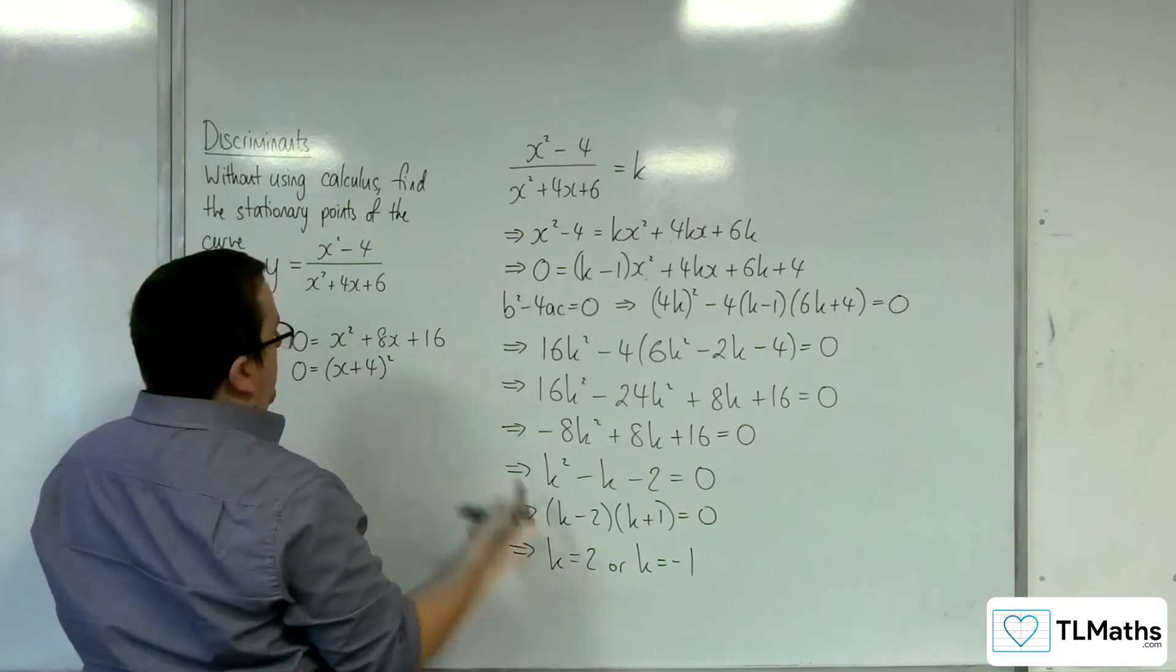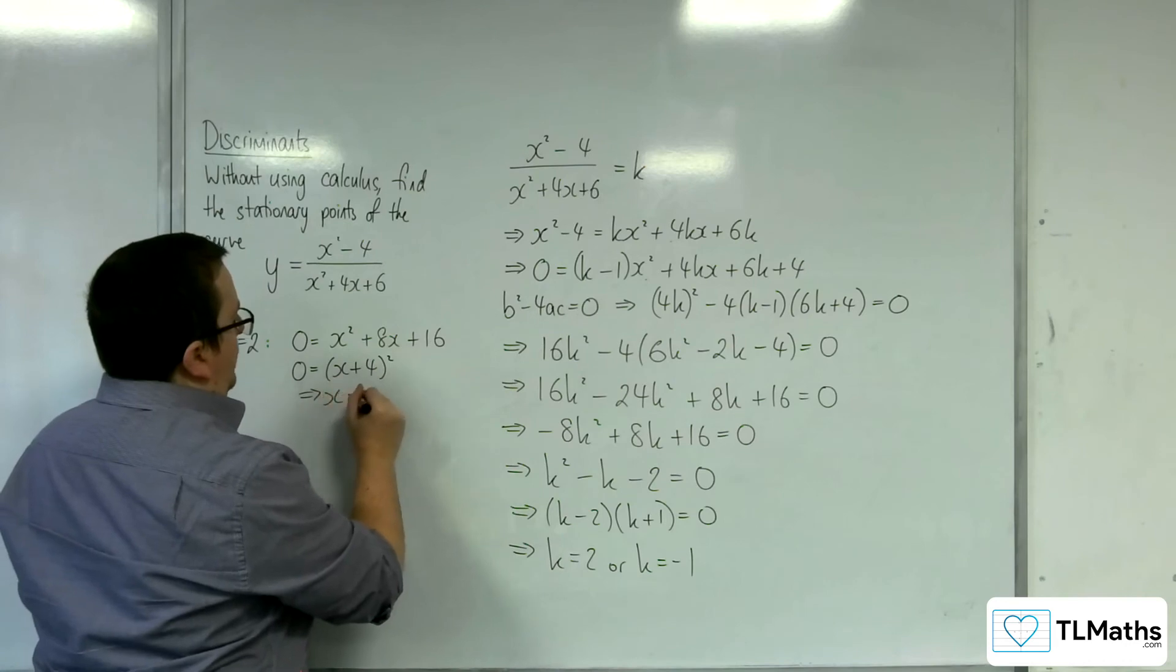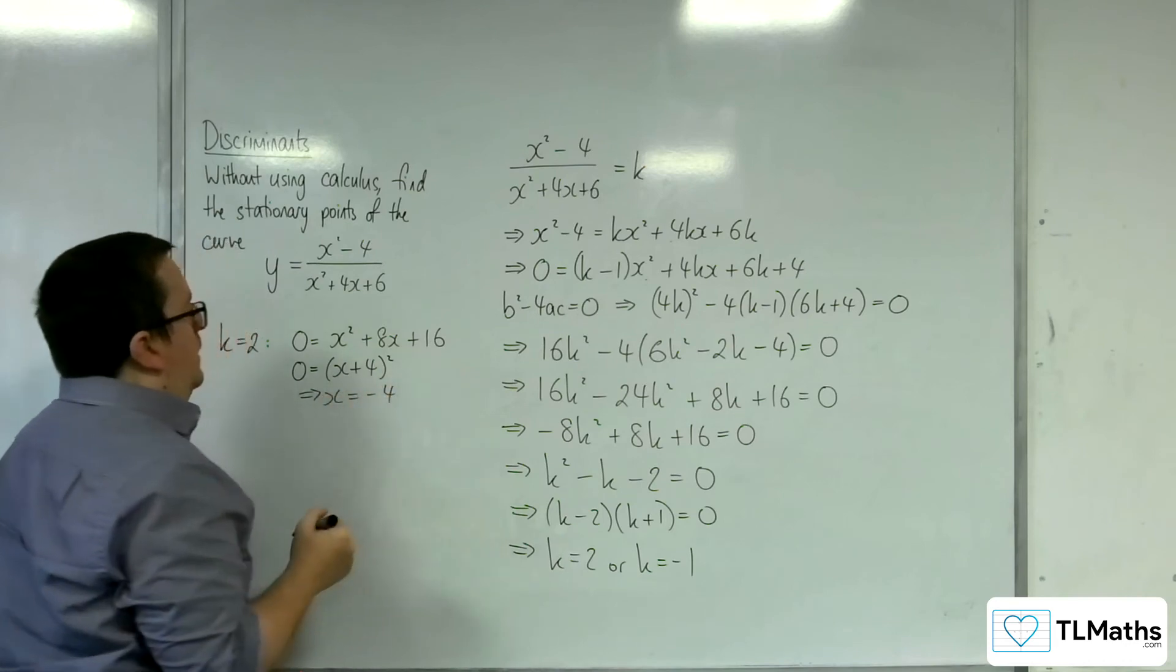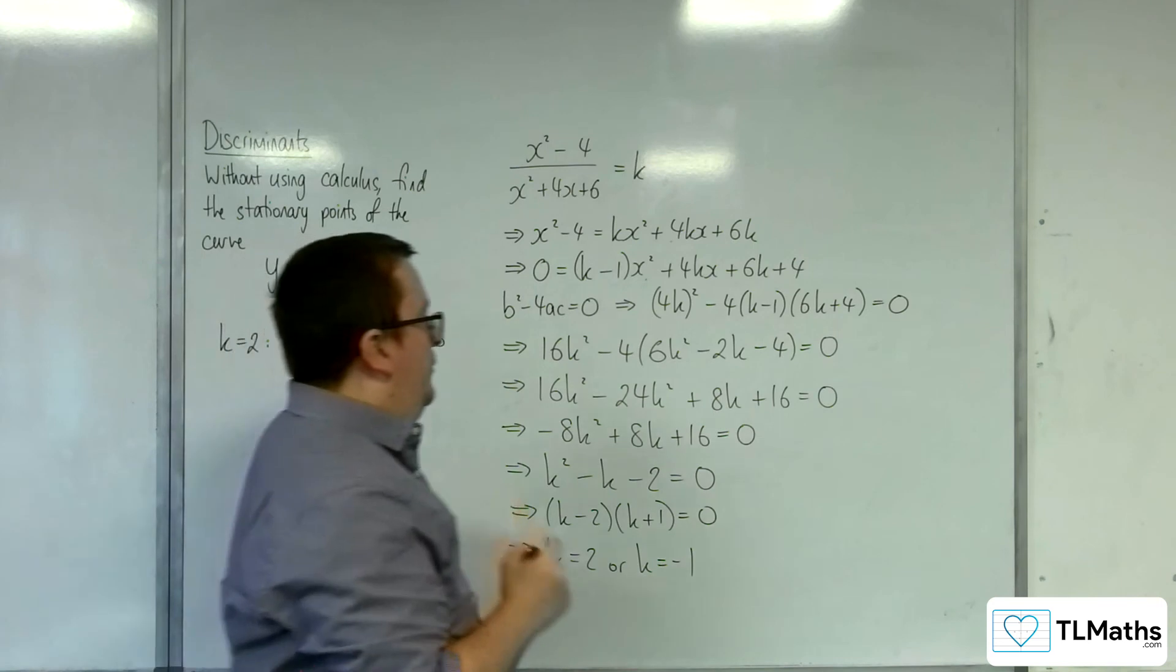And so by design, this should give you one solution for x. Otherwise we've been in trouble. And so x is equal to minus 4 there. So we've got one stationary point at minus 4, 2.